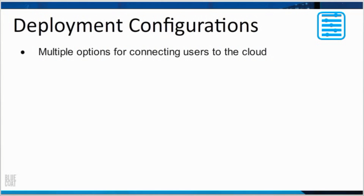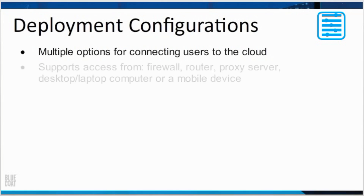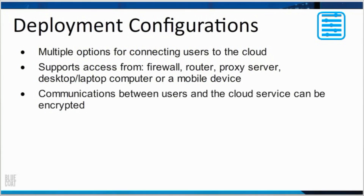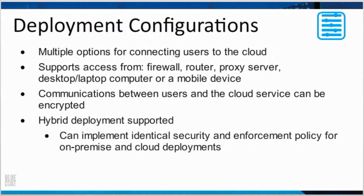The Bluecoat Cloud Web Security Service deployment configurations have multiple options for connecting users to the cloud. It supports access from firewall, router, proxy server, desktop or laptop computer, or a mobile device. Communications between the users and the cloud service can be encrypted. Hybrid deployment is supported — with a hybrid deployment, you can implement identical security and enforcement policy for on-premise and cloud deployments.